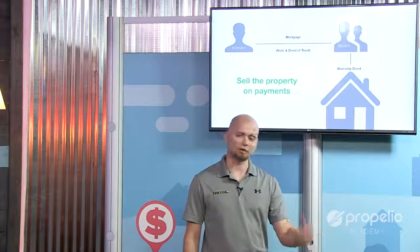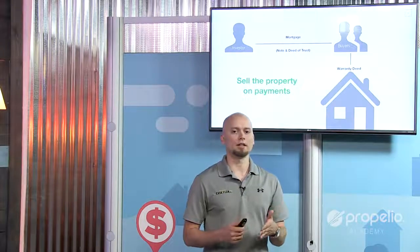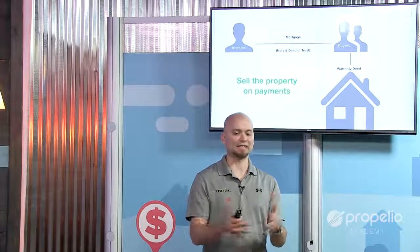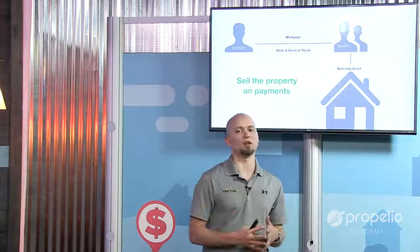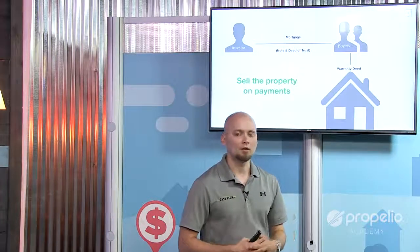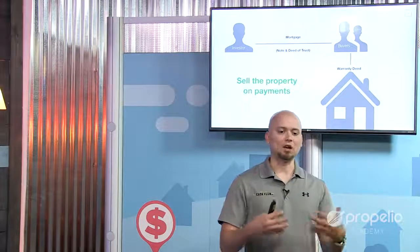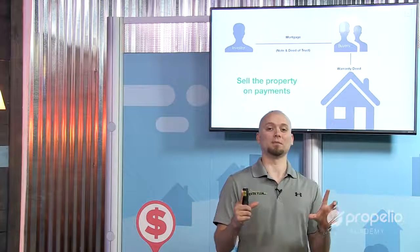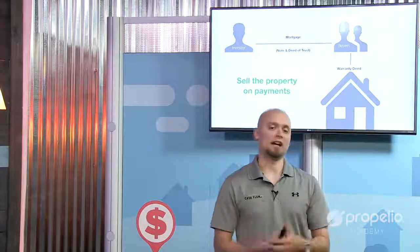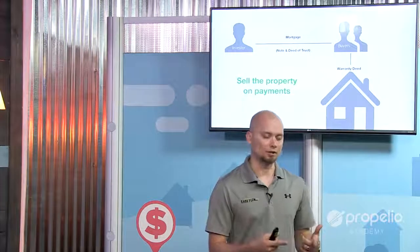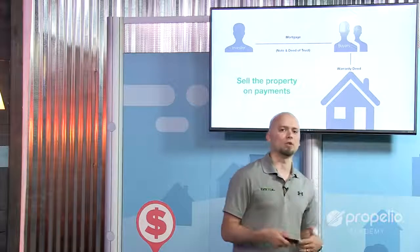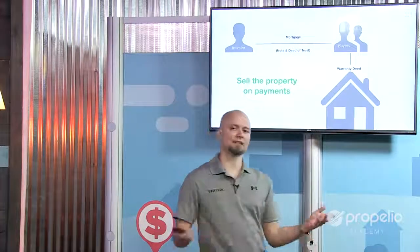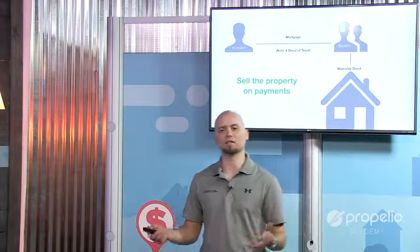A buyer comes in and says they'd like to buy the house for $100,000. You say: give me $10,000 as a down payment right now and I'll give you a loan for $90,000 — you can have the house. You sign the house over to them giving them a warranty deed — that gives them ownership of the property. In return you get a note and deed of trust signed between you, stating this person owes $90,000 for 30 years at 9.5%. The deed of trust says if the buyer doesn't pay, you get to foreclose and take the property back. That's owner financing in a nutshell.